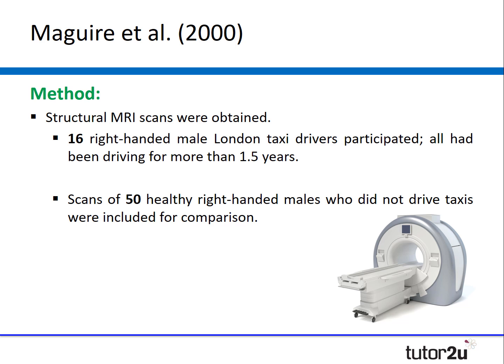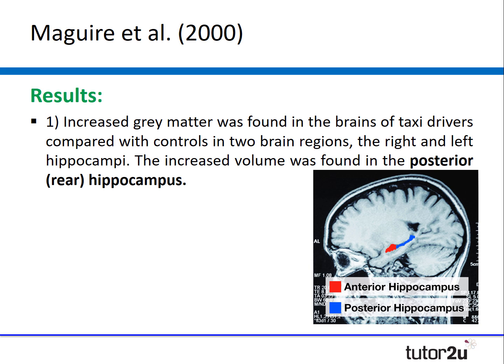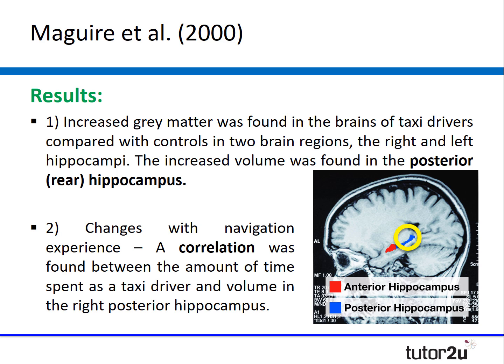She used structural MRI scans and looked at 16 right-handed male London taxi drivers who had all been driving for at least a year and a half, then compared those scans with the scans of 50 healthy right-handed males who didn't drive taxis. The first result is that there was an increase in grey matter found in the brains of the taxi drivers compared to the controls in the right and left hippocampi, and this increased volume was found in the posterior — the rear part — of the hippocampus, highlighted in the yellow circle on screen. The other important result was a positive correlation found between the amount of time spent driving a taxi and the volume in the right posterior hippocampus, meaning the longer the taxi driver had been driving, the larger this particular brain region.